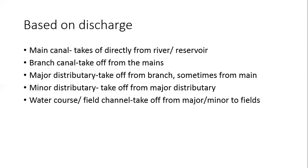Based on discharge, we have main canals, branch canals, major distributory, minor distributory, and watercourse or field channel. The watercourse or field channel is the last point on the canal network, adjacent to the field. The main canal takes off directly from a river or reservoir; from it, water passes through the branch canal, then major distributory, minor distributory, and finally to the field through the field channel.